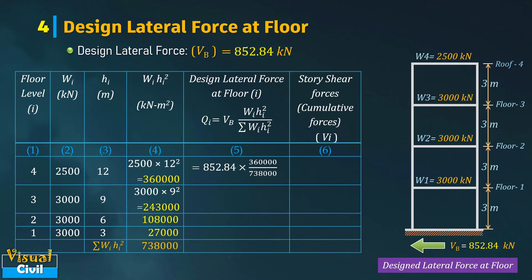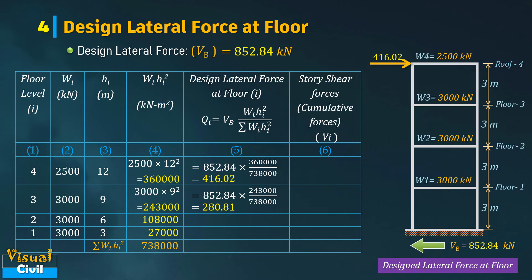Here Qi equals Vb (which is 852.84) multiplied by Wi × Hi² for the fourth floor (360,000), divided by the summation of Wi × Hi² (738,000). This gives the design lateral force at floor level 4 (roof) equal to 416.02 kilo-newton. By repeating the same procedure, the lateral force at floor level 3 is 280.81 kilo-newton, at floor level 2 is 124.8 kilo-newton, and at floor level 1 (first floor) is 31.2 kilo-newton.